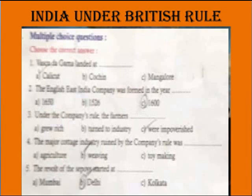The English East India Company was formed in the year 1600. Under the company's rule, the farmers were impoverished. The weaving industry was ruined under the company's rule, which contributed to the revolt of the Sepoys at Delhi.